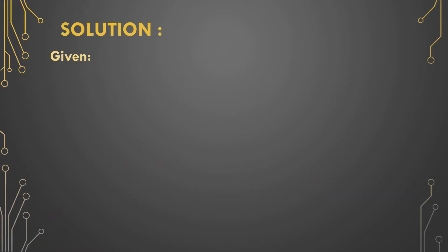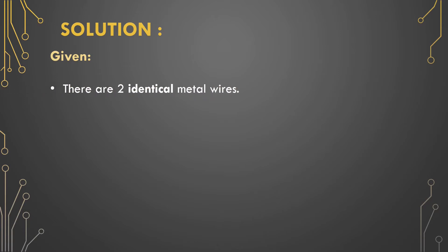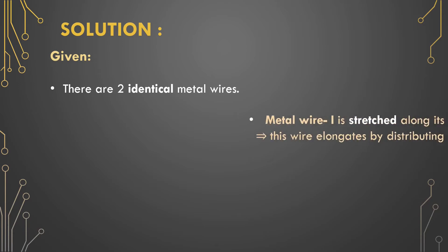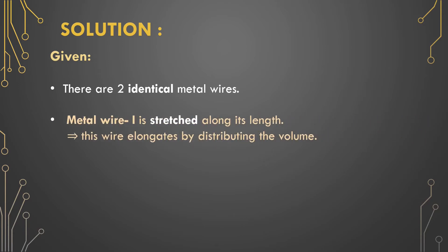Solution. Let us see what is given in the question. It is given that there are two identical metal wires. We know that metals are ductile — that is, they can be easily stretched out into a wire or thread. Here we stretch metal wire 1 along its length, and as a result the wire elongates by distributing its volume.